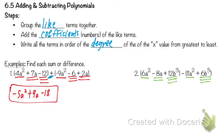Now here's the thing — we're doing all of the first minus all of the second. So it's like 6a squared minus 11a squared, which is negative 5a squared. When we have negative 8a, is there anything to subtract it by in the second parenthesis? No, so we just leave it as negative 8a. It's like adding or subtracting zero. And then 12b to the third minus 6b to the third — we have to make sure we're still minusing there — gives us 6b to the third. That should be positive 6b to the third.